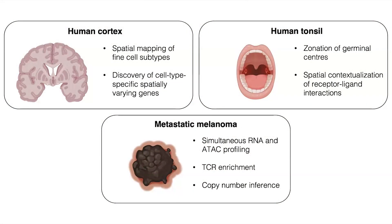Now that we have slide tags as a tool for truly single cell spatial genomics, we wanted to apply it to different human tissue contexts. In our paper, we apply slide tags to the human cortex to define fine cell subtypes and spatially varying genes, to the human tonsil to predict and spatially contextualize receptor-ligand interactions important in immune responses, and to a human metastatic melanoma sample to demonstrate the multimodal capacity of slide tags and understand tumor evolution.